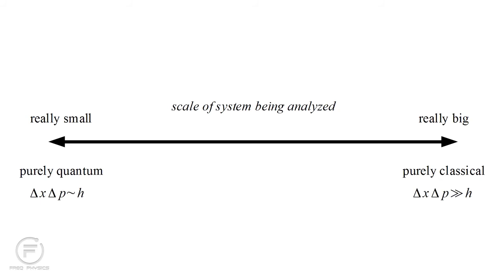If the product of the ranges of position and momentum is much bigger than Planck's constant, then quantum effects are negligible. This is true in the macroscopic world of our day-to-day experience. If, on the other hand, the product is on the order of Planck's constant, then quantum effects will be very important.